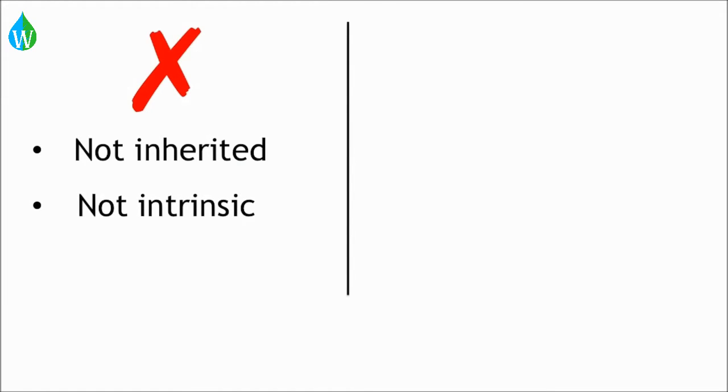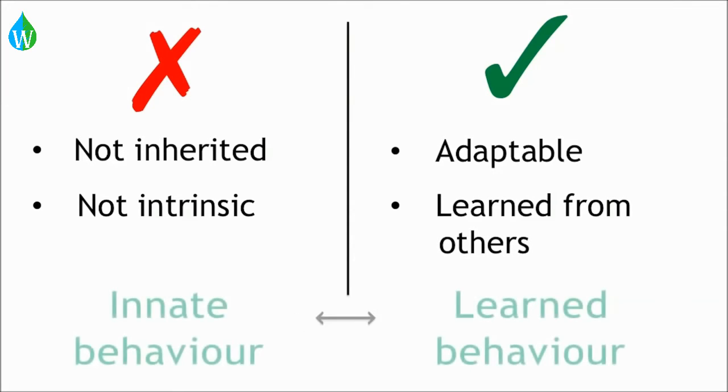So, to recap, learned behavior is not inherited. It is not intrinsic, so it wouldn't be present in animals raised in isolation. It may change over time and adapt or improve, and sequences might change. Learned behavior is learned from other individuals, the opposite of innate behavior.